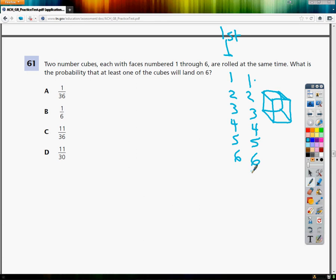The question asks, what is the probability that at least one of those cubes will land on 6? Now if you've been watching any of the videos that I've been doing previously about this, probability makes me think of two things. Number one, a total. And number two, a fraction. At least one fraction, sometimes more.